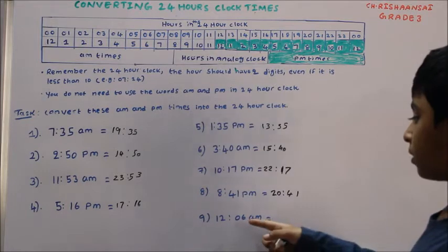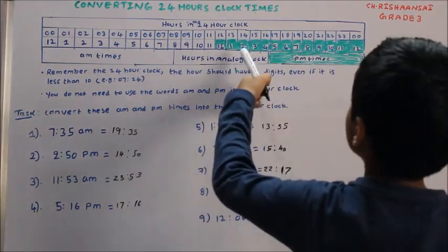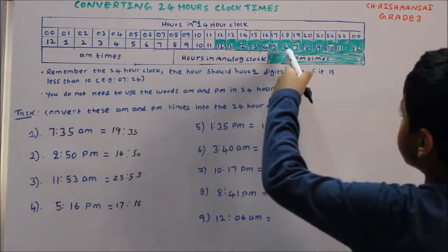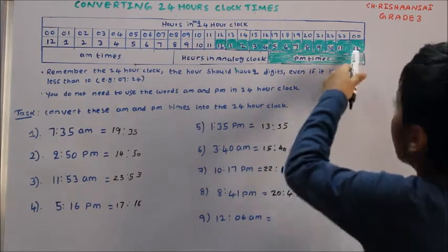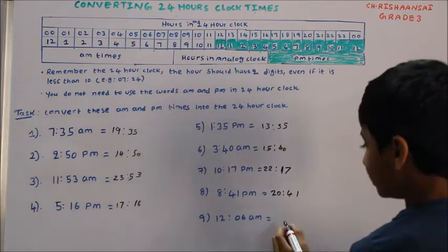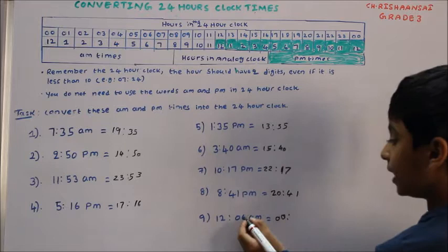12:06. Here is 6 and here is written 12, so we have to write 00, two dots, and write 06.